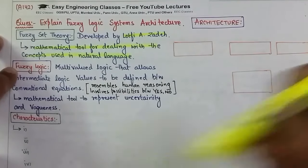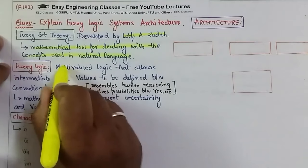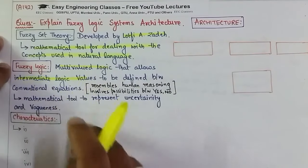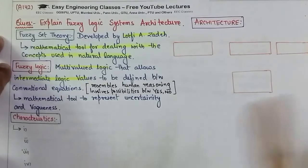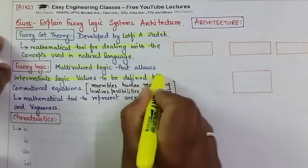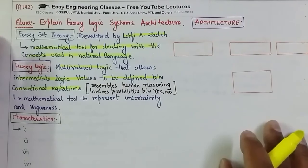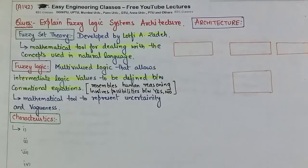So what is the fuzzy logic? It is a multi-valued logic that allows intermediate logic values - possibly yes, certainly yes - to be defined between conventional equations. So this is the basic introduction of fuzzy set theory and fuzzy logic.